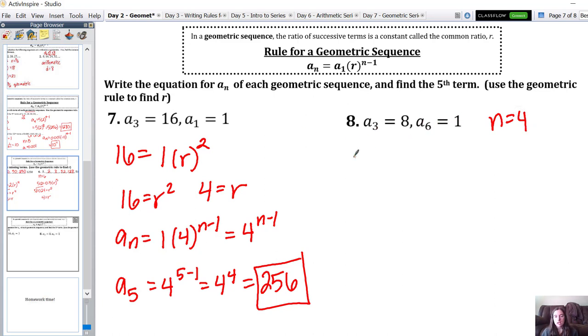The last term that we know about, a sub 6, is 1. The first term that we know about is 8, times r to the power of 4 minus 1, which is 3. Dividing by 8, we just have 1 over 8 equal to r to the 3rd. Now we need the cubed root of both sides. The cubed root of 1 over 8 is 1 half. So r is equal to 1 half.